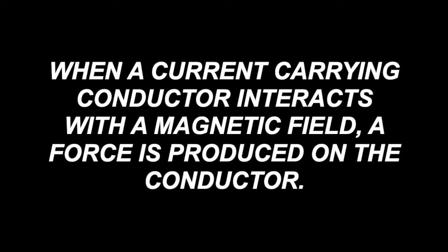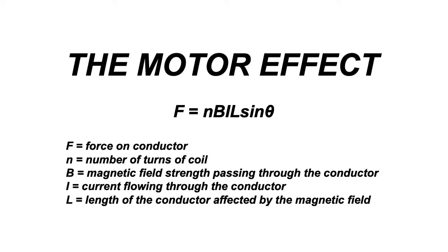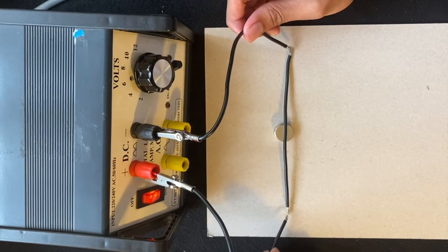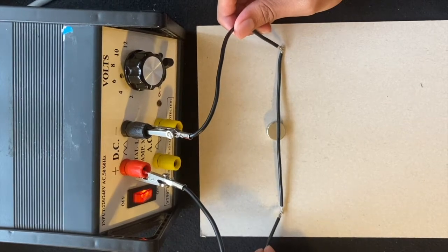When a current-carrying conductor interacts with a magnetic field, a force is produced on the conductor. We call this the motor effect, and is demonstrated here using a wire connected to a power source resting on top of a magnet.